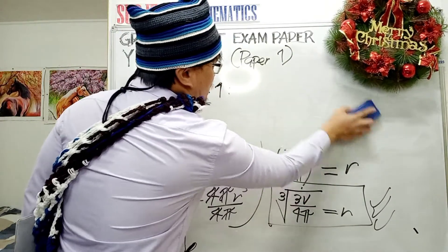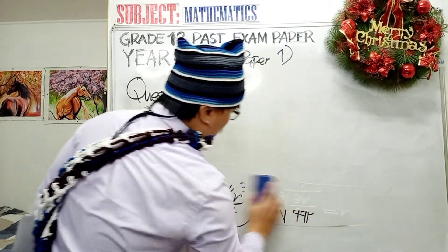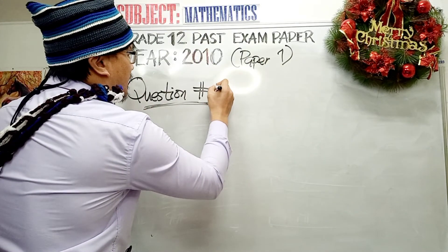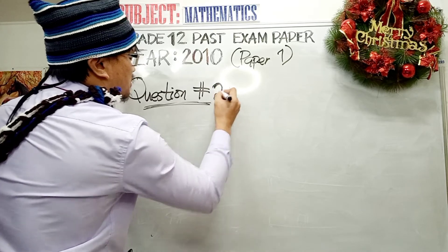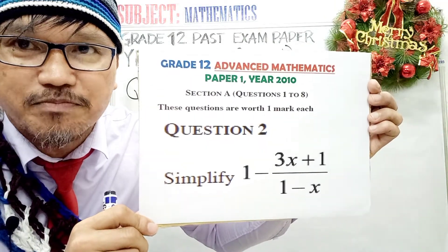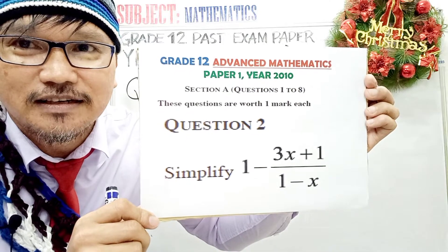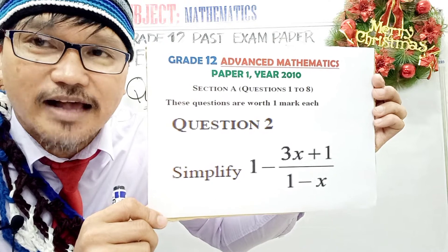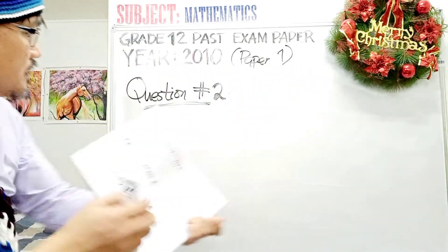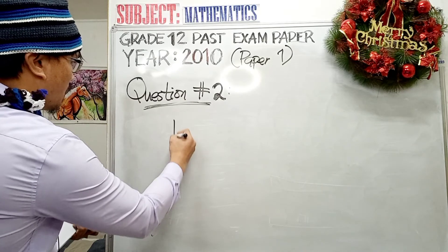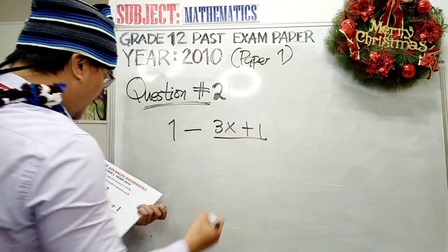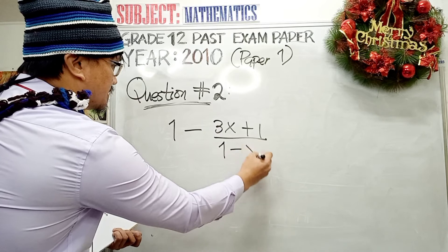What do you think question number 2 is about — worth one mark? Which topic is question number 2 covering for grade 12 advanced mathematics students? This is question number 2, grade 12 advanced mathematics, paper 1, year 2010. This question is about simplifying — it is more on algebra. We have: 1 minus (3x plus 1) divided by (1 minus x).